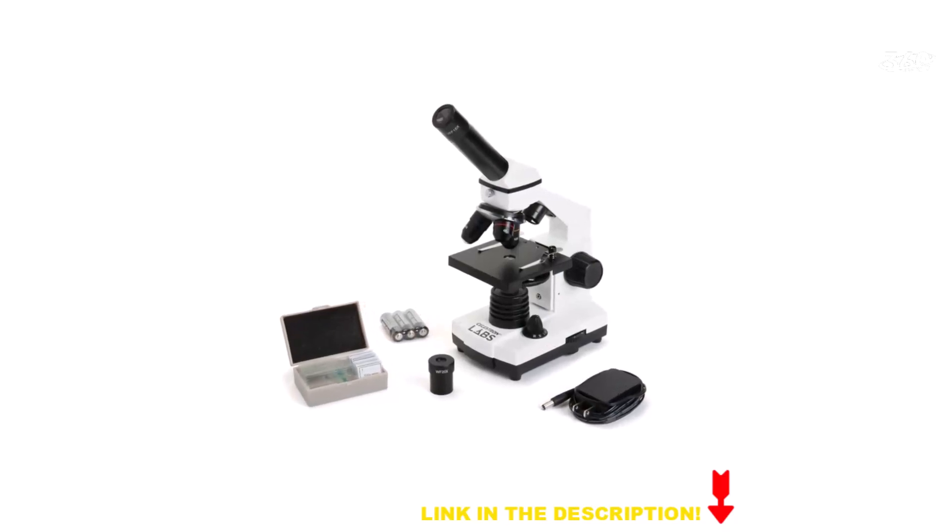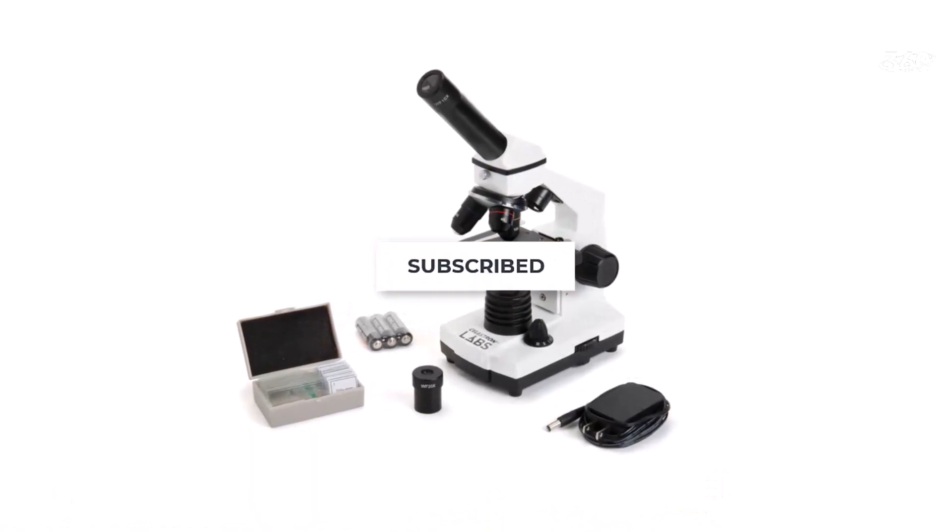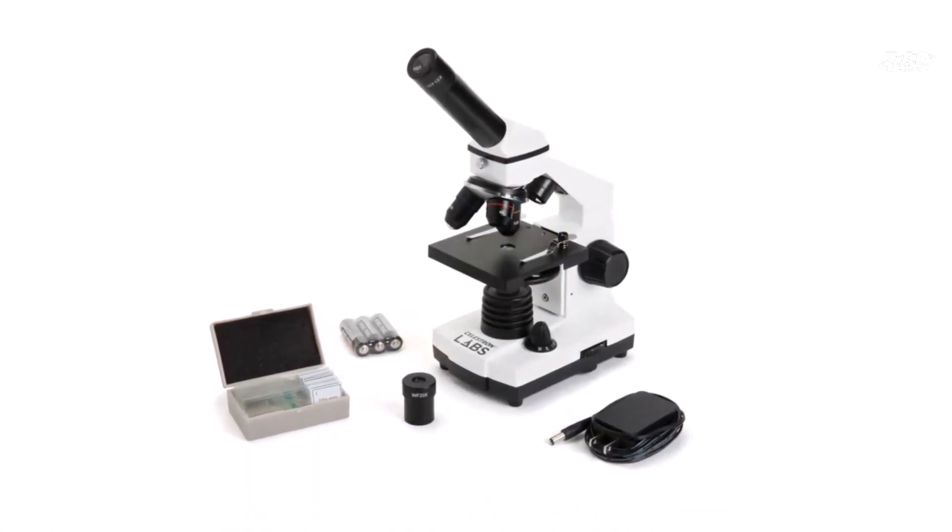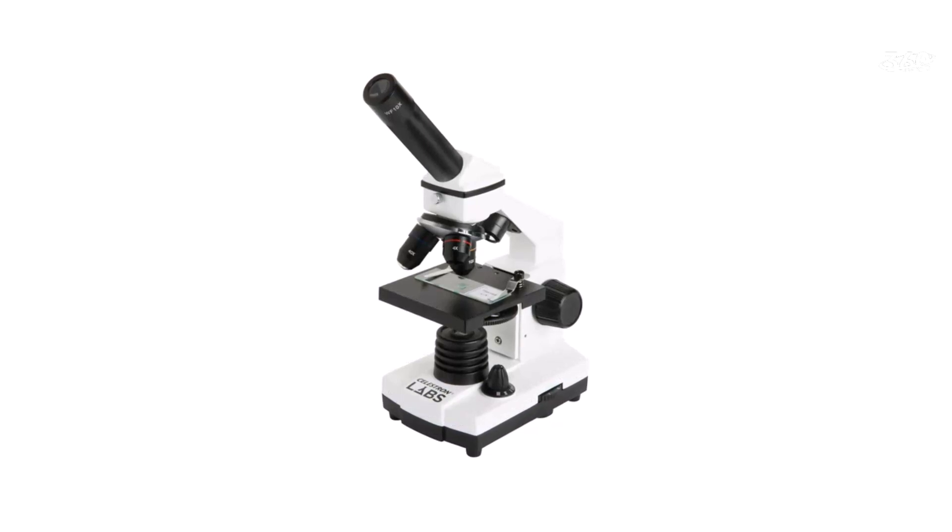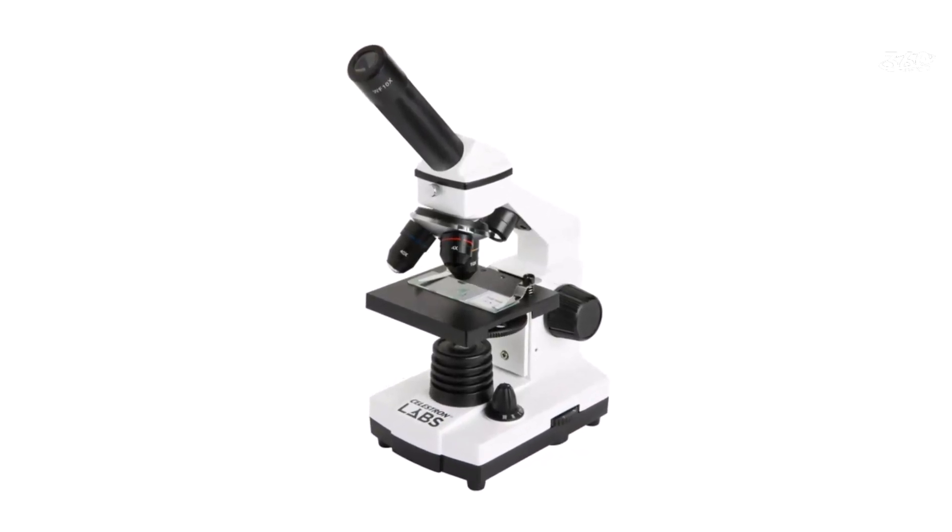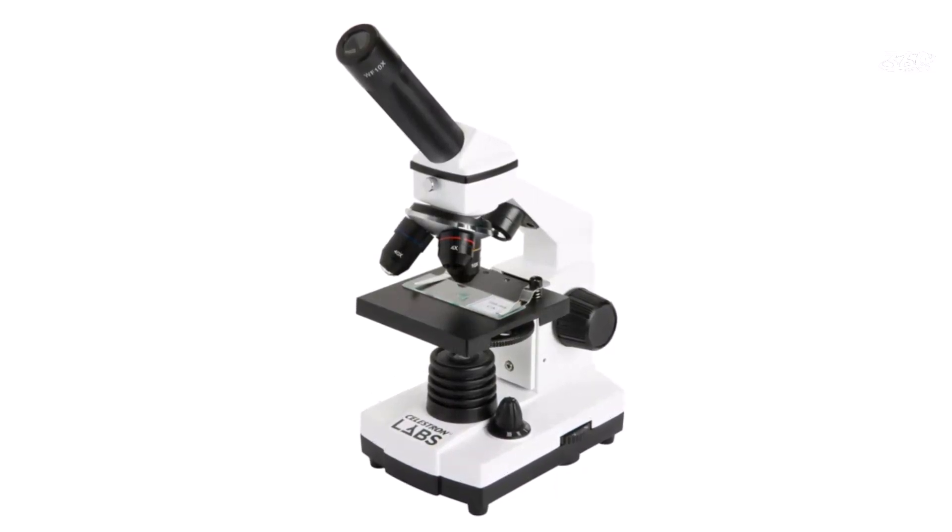This allows you to control the brightness and focus of the light source, ensuring clear visibility of your specimens. The adjustable illumination is particularly beneficial when observing translucent or transparent samples, as it helps to enhance contrast and details. The Celestron CM800 comes with the convenience of battery-powered operation.